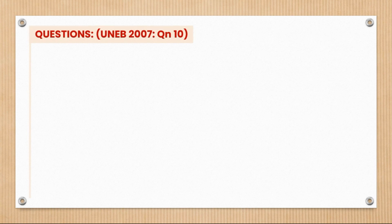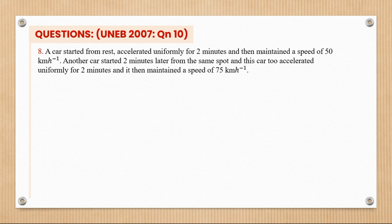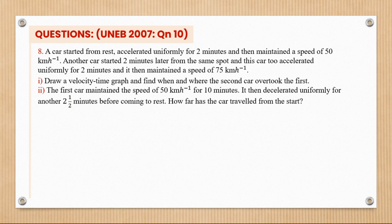Question 8 (from 2007, question 10): A car started from rest and accelerated uniformly for 2 minutes, then maintained 50 km/h. A second car started 2 minutes later from the same spot, accelerated uniformly for 2 minutes, then maintained 75 km/h. Draw a velocity-time graph and find when and where the second car overtook the first.